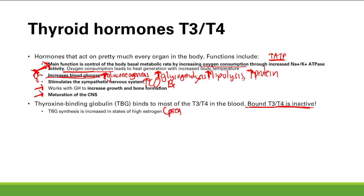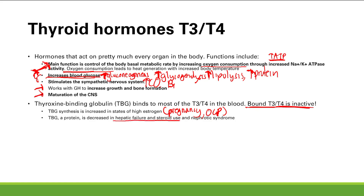So if you're taking oral contraceptives, you'll have increased TBG synthesis and thus increased bound T3 and T4. Things that decrease TBG: since TBG is a protein, anything that decreases protein synthesis decreases it — such as hepatic failure and steroid use. Steroids decrease protein synthesis, and proteins are made in the liver. Nephrotic syndrome also decreases TBG.